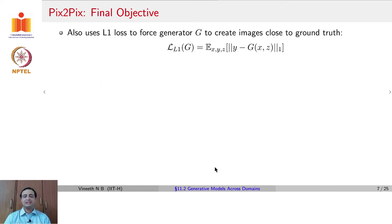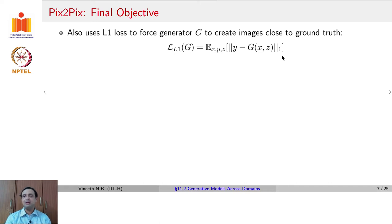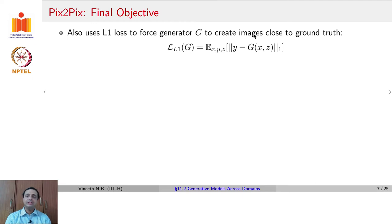In addition, Pix2Pix also introduces an L1 objective to ensure that the generated image matches the original expected photo from the second domain. The generator also tries to minimize the L1 loss — the sum of absolute values of each element — between Y (the image from domain 2, in our case a photo) and G(X, Z), where X is a sketch and Z is the latent noise vector. G(X, Z) is the generated image from domain 2, and we would like that to match Y as closely as possible.